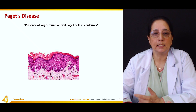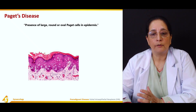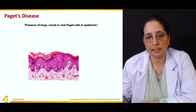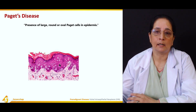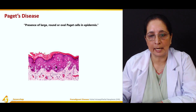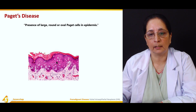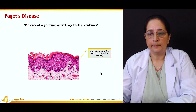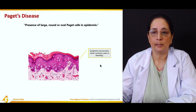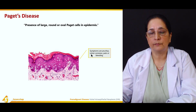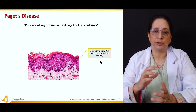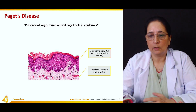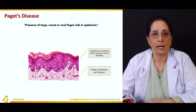Paget's disease is a condition in which large, round or oval Paget cells are present in the epidermis. Paget cells have clear cytoplasm and an eccentric nucleus. Symptoms include pruritus (itching), vulvar soreness, pain, and bleeding. Treatment is simple vulvectomy, and biopsies are also performed.